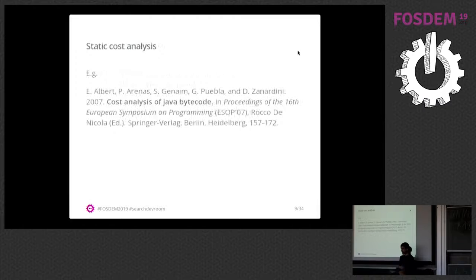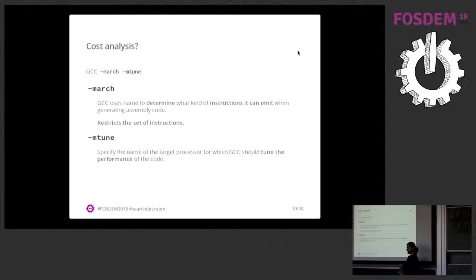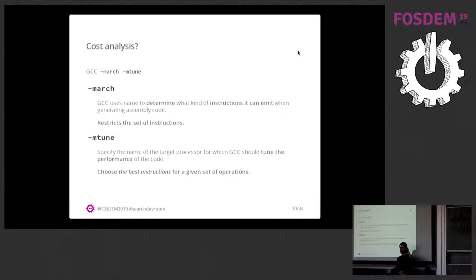About static cost analysis — there are papers on it, including one from the University of Madrid on running cost analysis on Java bytecode. In GCC we already have flags like mArch and mTune which target your code for a given architecture. mArch restricts the set of instructions to those specific to a given processor, while mTune says — from the instructions common to all architectures, choose the specific ones that perform best on a certain processor.